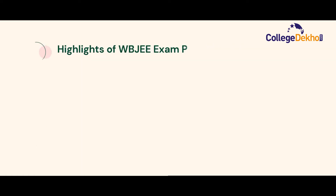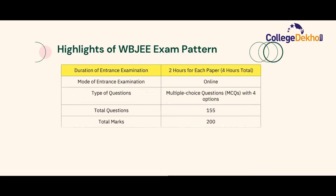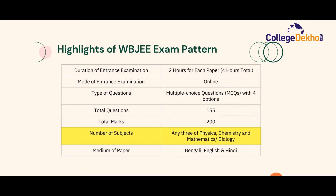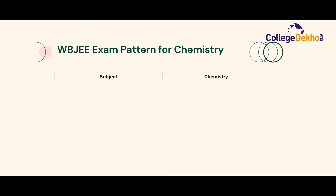First, let us look at some of the important highlights of the WBJEE exam pattern. The duration of the test will be 2 hours for each paper, that means 4 hours in total for both papers. The mode of the exam will be offline. The type of questions will be multiple choice questions — candidates will be provided with four options for each question and will have to choose one correct option. The total number of questions for the exam will be 155, and the exam will be conducted for a total of 200 marks. There will be three subjects: Physics, Chemistry, and Mathematics or Biology (Biology is for pharmacy students). The medium of the paper will be Bengali, English, and Hindi.